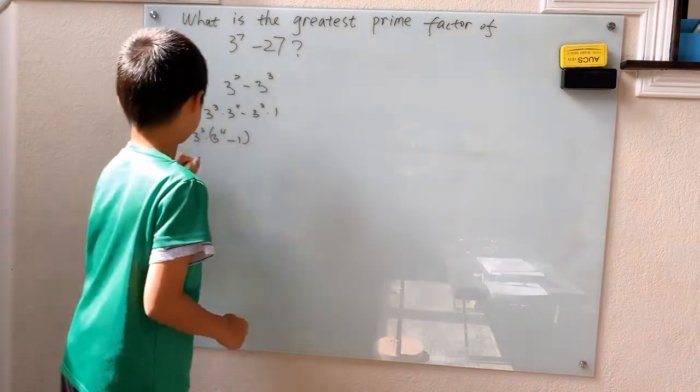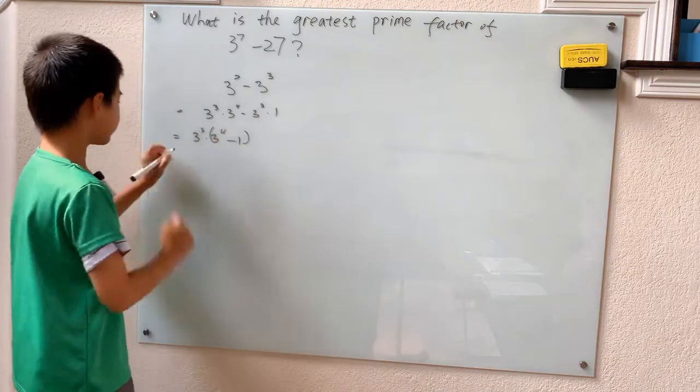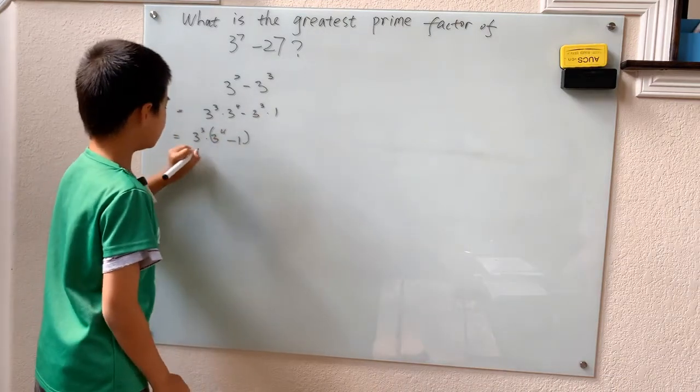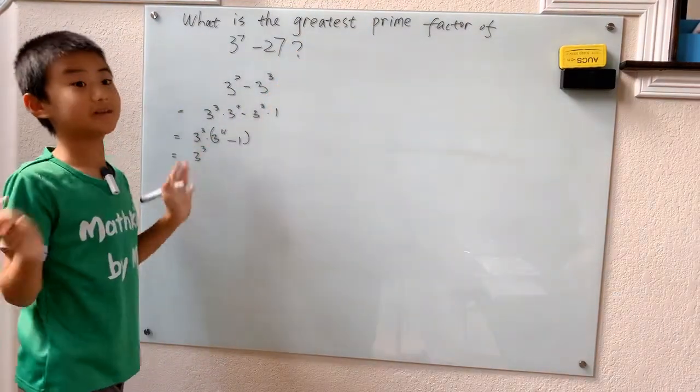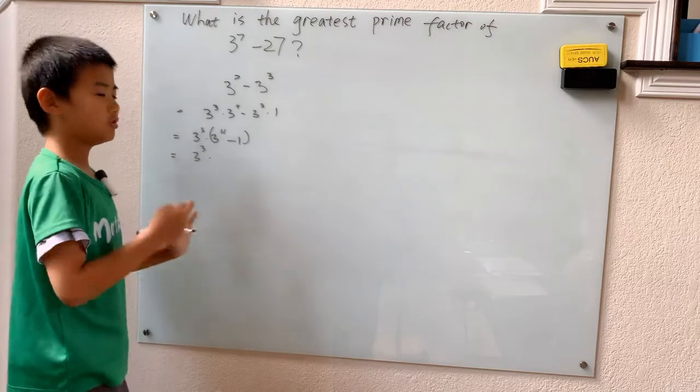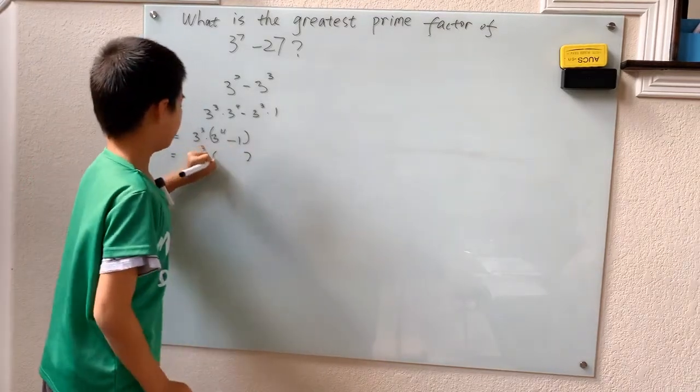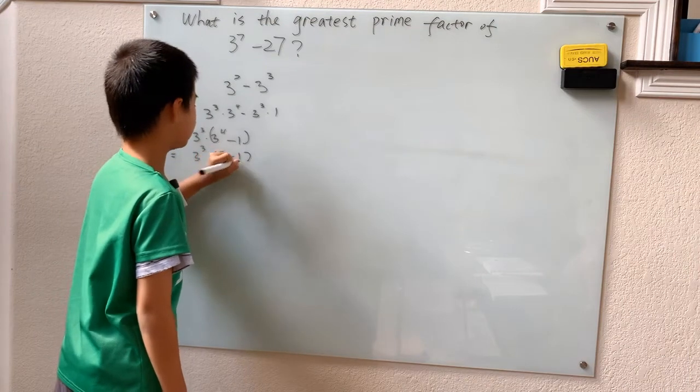I'm going to go ahead and compute this 3 to the 4th minus 1, which is a little bit easier. In fact, it's not a little bit easier, it's a whole lot easier. Since if you know your powers of 3, you know 3 to the 4th is 81. Or you can just see 3 to the 4th is 9 squared, which is 81.